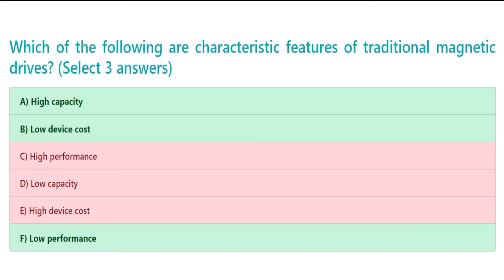The correct answers are A. High capacity, B. Low device cost, and F. Low performance.